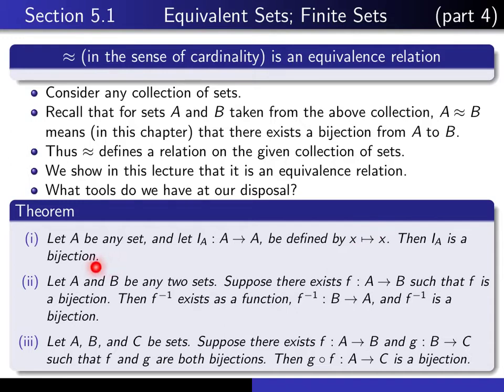The second one says that if you have two sets, and you have a function from A to B which is a bijection, then F inverse, which always exists as a relation but is not normally a function, in this case it is a function and it's also a bijection. One can only say that if the original function F is a bijection.